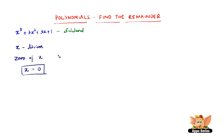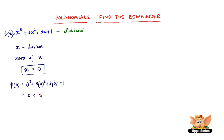So now let us consider this as p of x. Therefore, p of 0 will be equal to 0 cube plus 3 into 0 square plus 3 into 0 plus 1. So 0 cube is 0, 3 into 0 is 0, 3 into 0 is 0, plus 1. So we have 1 as the remainder of this polynomial.